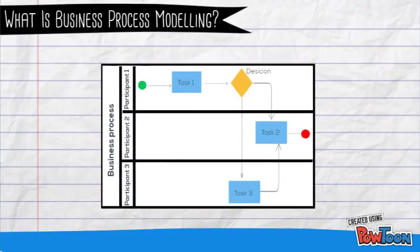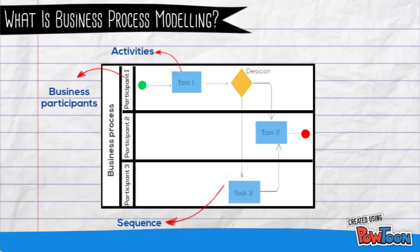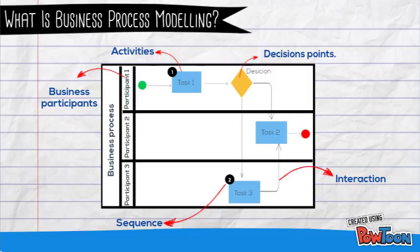The process model captures the business process flow or workflow for each process, showing their business participants, their activities including inputs and outputs, the sequence of these activities, the interactions between various participants, and the business decision points.